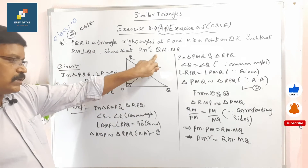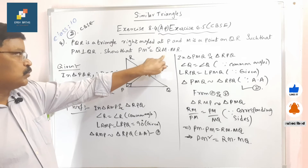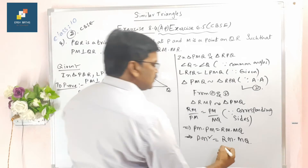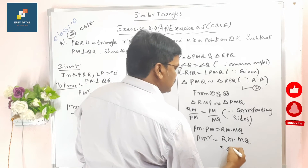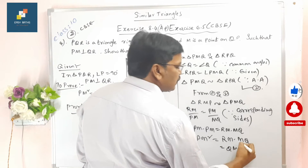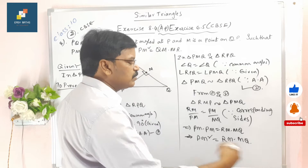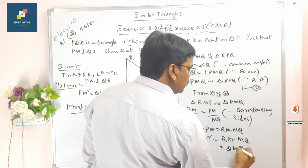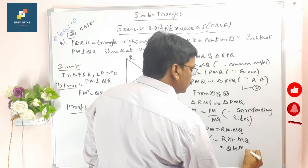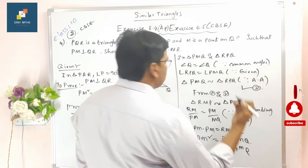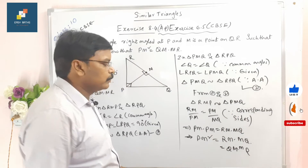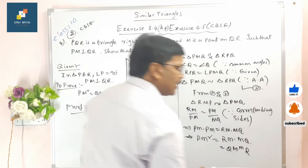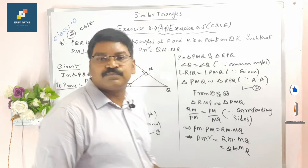So what we have to prove here is QM into MR — this is the same as RM into MQ, since MQ can be written as QM and RM as MR, both are the same. Hence it is proved. I hope you understand this theorem. This is the fourth sum for AP board students.